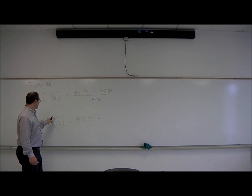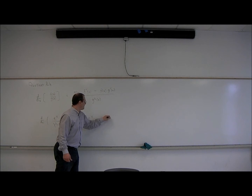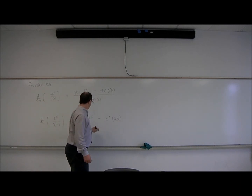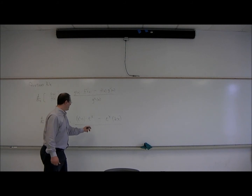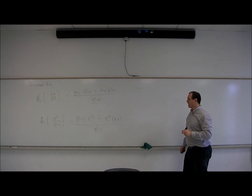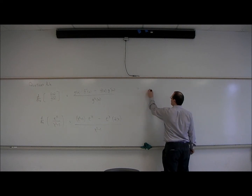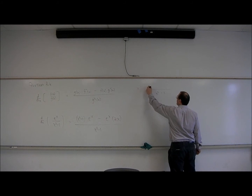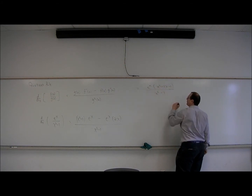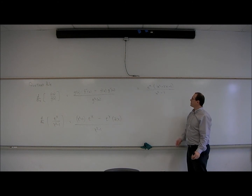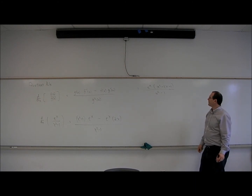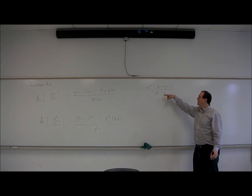So it's the bottom times the derivative of the top, minus the top function e^x times the derivative of the bottom function. The derivative of x²-1 is 2x. And then divided by the bottom function x²-1, squared. We can clean this up: the numerator is e^x times the polynomial x²-2x-1. This polynomial does not factor, so this will not simplify further. That's our final answer.